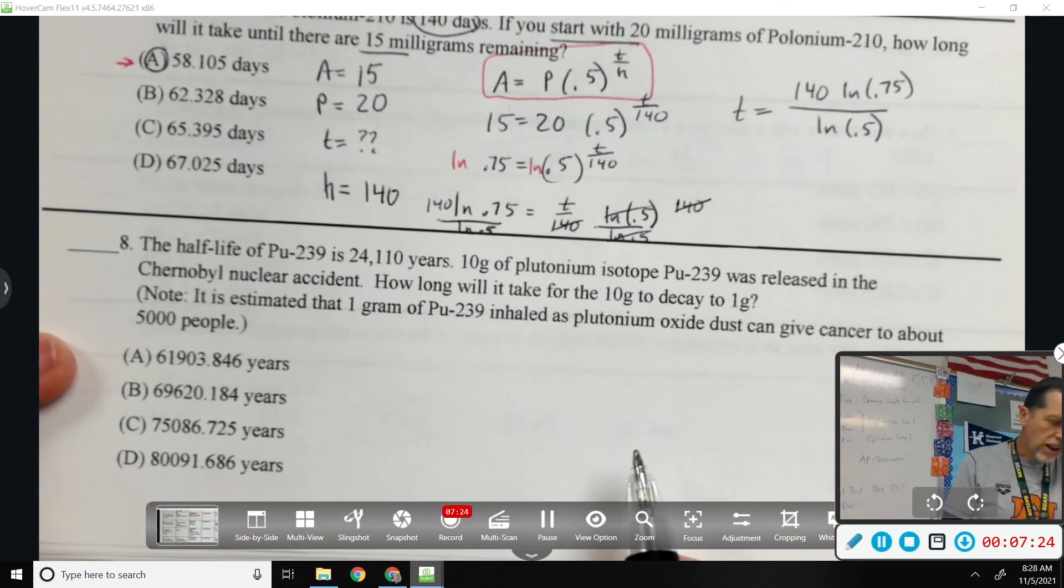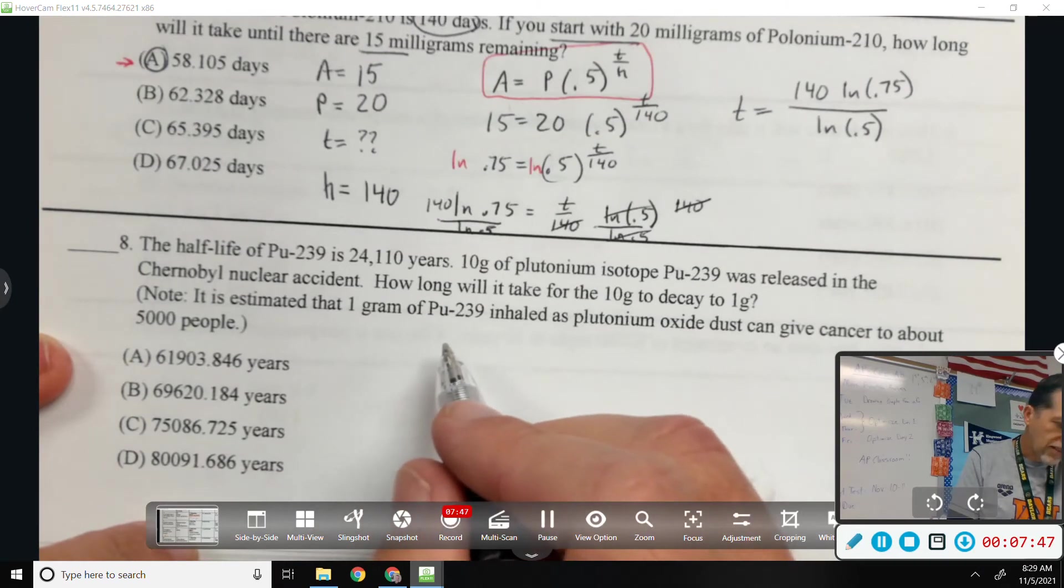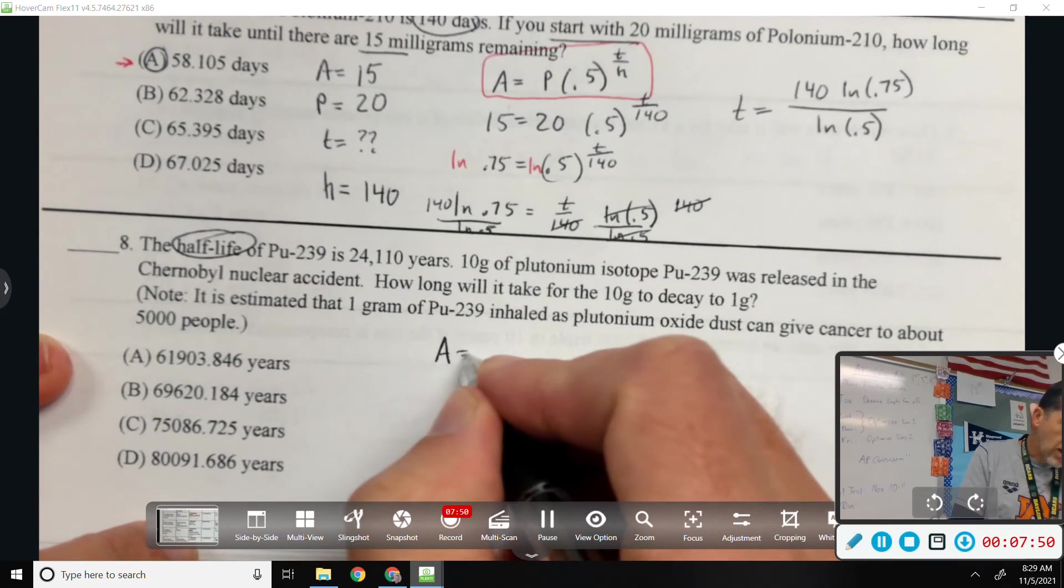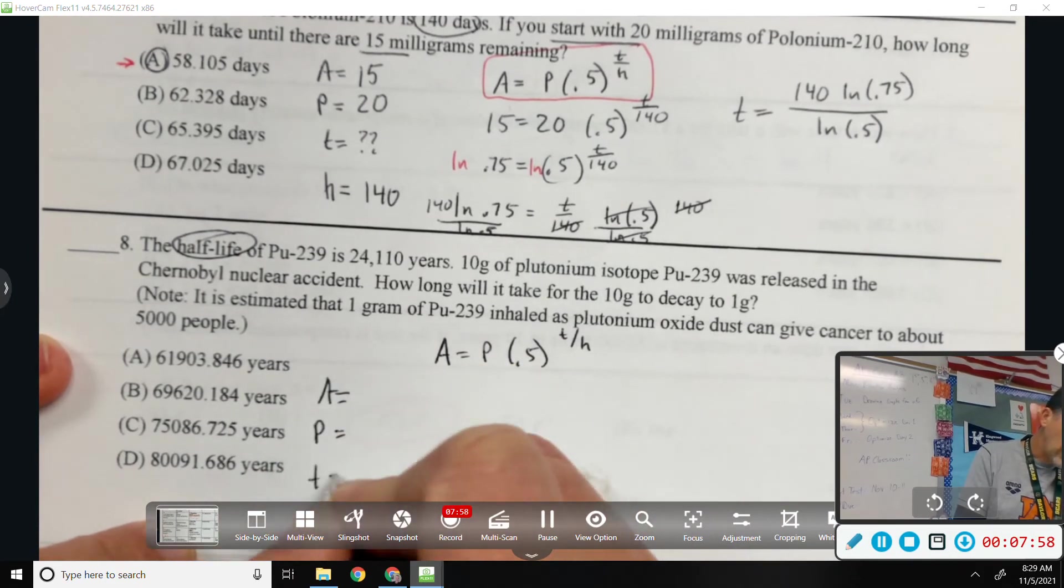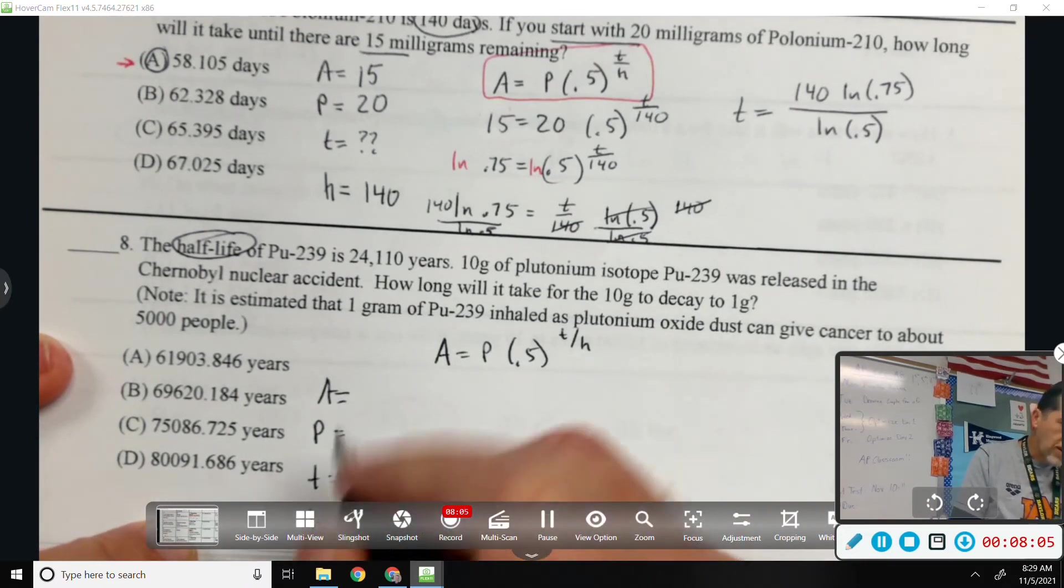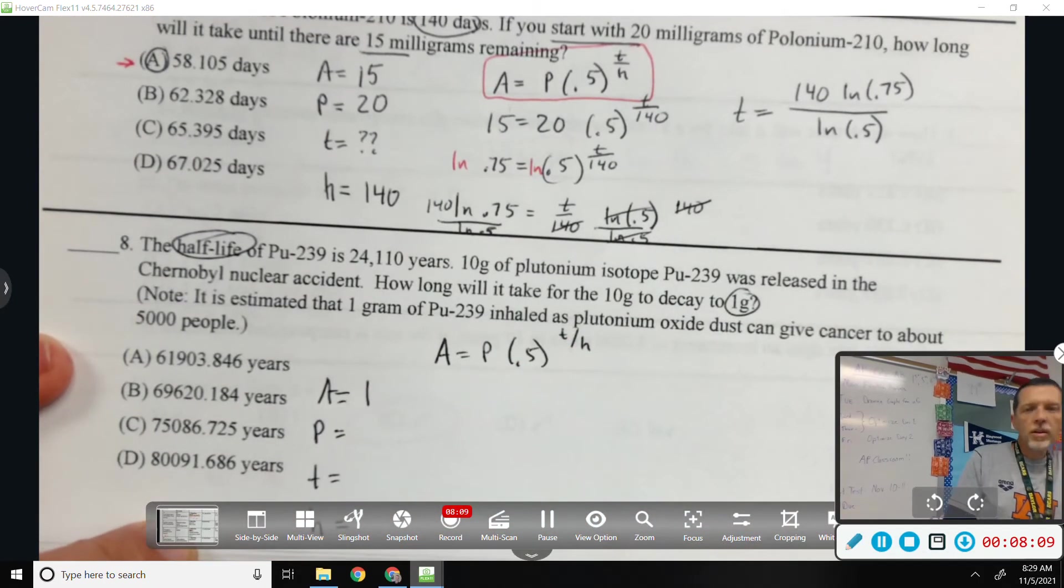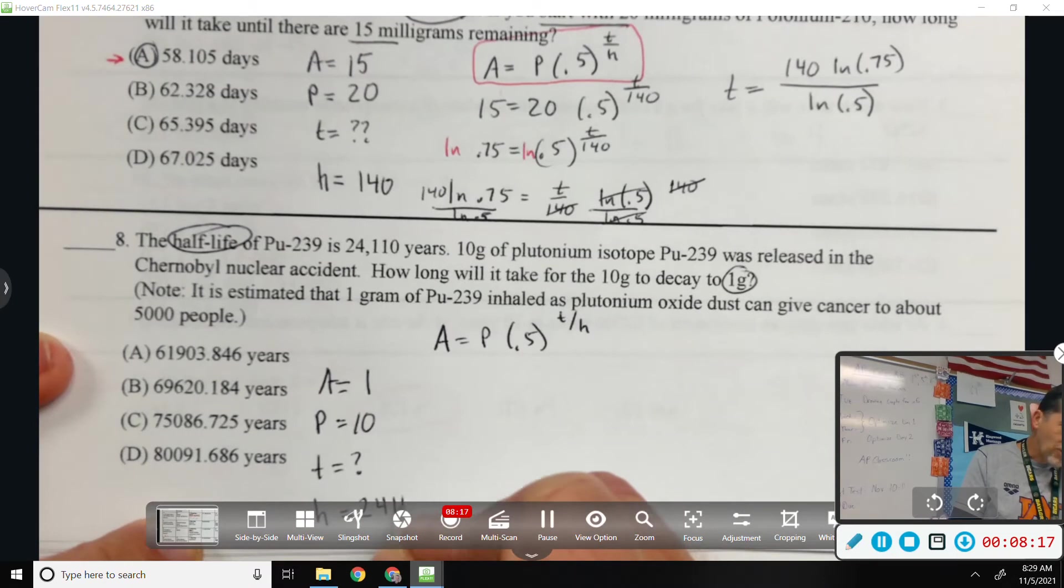Half-life of plutonium-239 is 24,110 years. If 10 grams of plutonium was released in the Chernobyl nuclear accident, how long will it take for the 10 grams to decay to 1 gram? Probably a really long time. So, this is half-life formula. A equals P times 0.5 to the T over H. So, I need A, P, T, and H. After. What is A? What's the after? 1 gram, to decay to 1 gram. P is 10. That's the before. T is the unknown. H is 24,110.